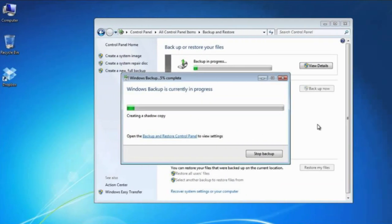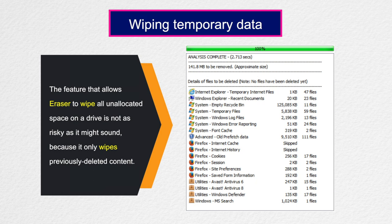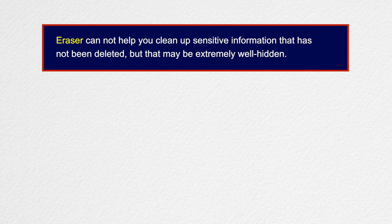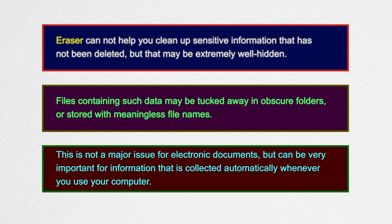Always make sure you have a secure backup before wiping large amounts of data from your computer. The feature that allows Eraser to wipe all unallocated space on a drive is not as risky as it might sound, because it only wipes previously deleted content — normally, visible files will be unaffected. On the other hand, this fact highlights a separate issue: Eraser cannot help you clean up sensitive information that has not been deleted but may be extremely well hidden. Files containing such data may be tucked away in obscure folders or stored with meaningless file names.